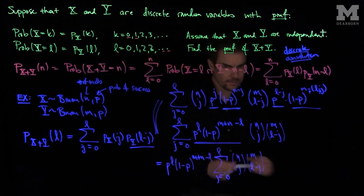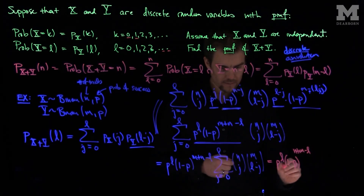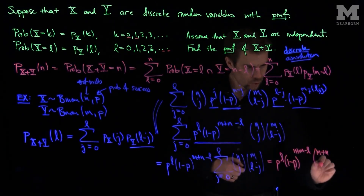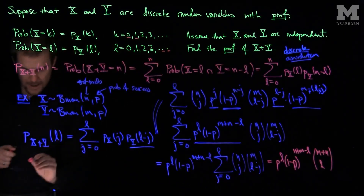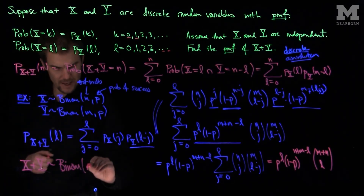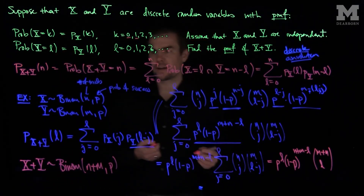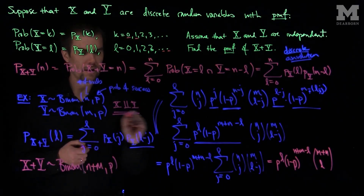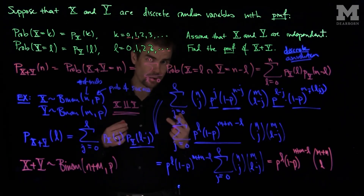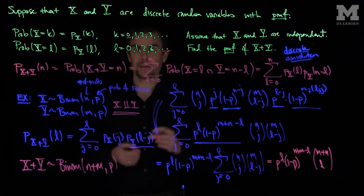This is a combinatorial identity, giving us p to the L times (1 minus p) to the (n plus m minus L) times (m plus n) choose L. So we see that X plus Y is a binomial random variable with parameters n plus m and p. In other words, if we add two independent binomial random variables with common probability of success p — one with n trials and one with m trials — the resulting sum is binomial with m plus n trials and the same probability of success p. Thank you very much.